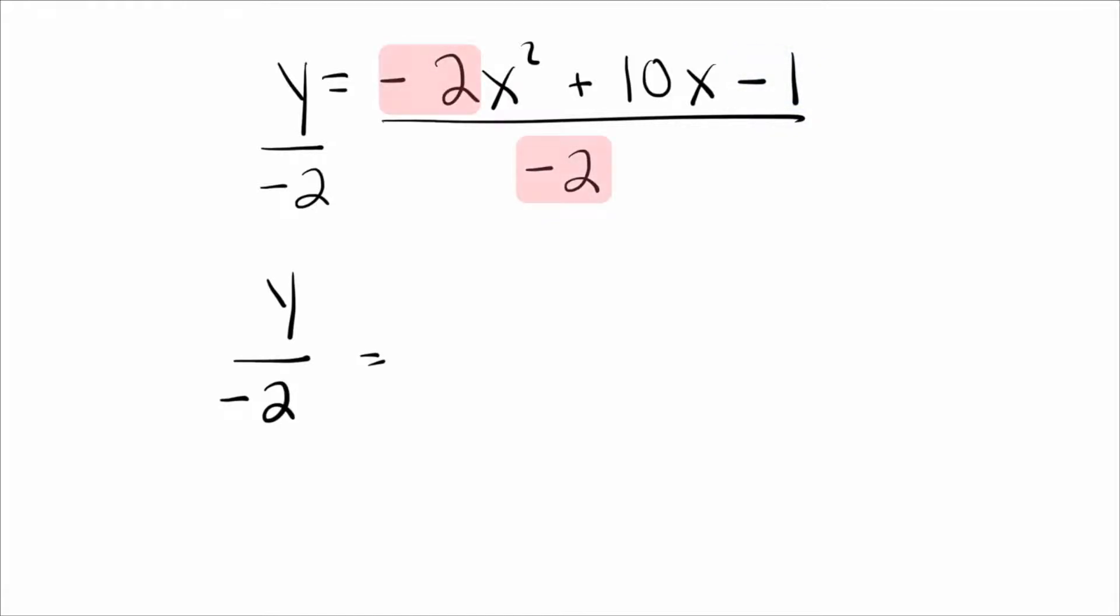Okay, so the negative 2s cancel. I'm left with x squared. 10 over 2, I get 5, and this becomes positive 1 half. Okay, so the point is, once you did that, on the right now, you've got something that does not have a number in front. So that's great. So you just complete the square with that. So pretend like the left side is not there. Don't even worry about it.